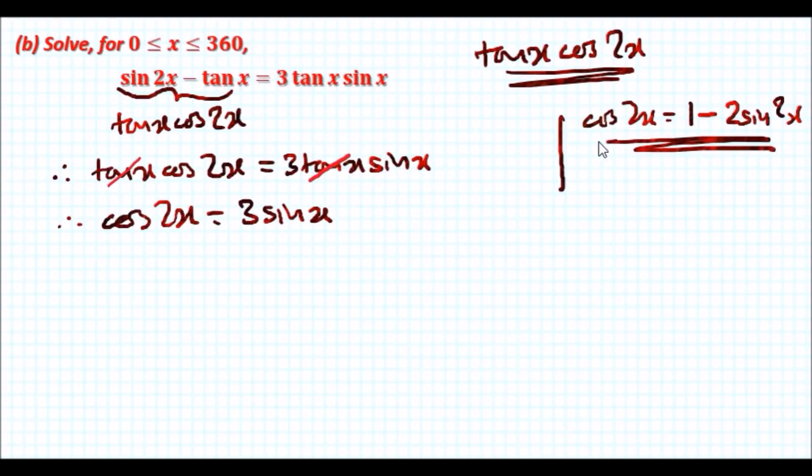The double angles we had, so we saw that cos 2x was cos squared minus sin squared. It can also be rewritten as 1 minus 2 sin squared x. So this is another version of the double angle of cos 2x. Let's replace cos 2x here with this sin squared x version.